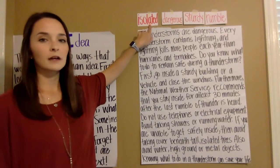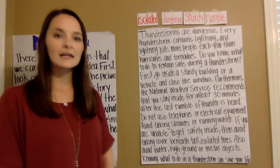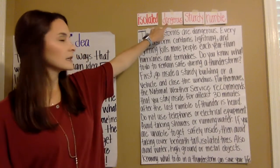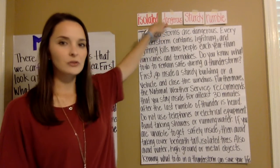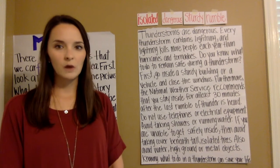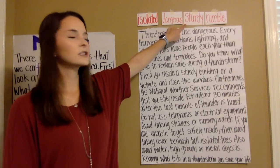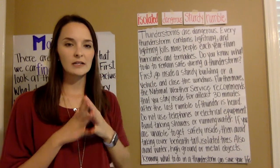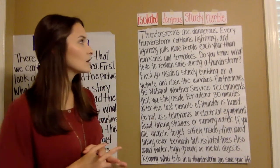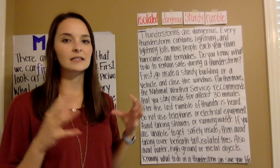The first word is isolated. If something is isolated, that means it stands alone — it's by itself. The second word is dangerous. If something is dangerous, it can cause you harm. Our third word is sturdy. If something is sturdy, it's strong — nothing's going to happen to it. And our final word is rumble. Rumble is just a continuous loud sound.